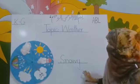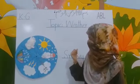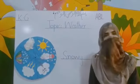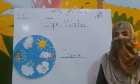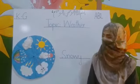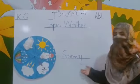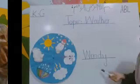Next is snowy. When it's cold, snowflakes fall from the sky. We say it's snowy.